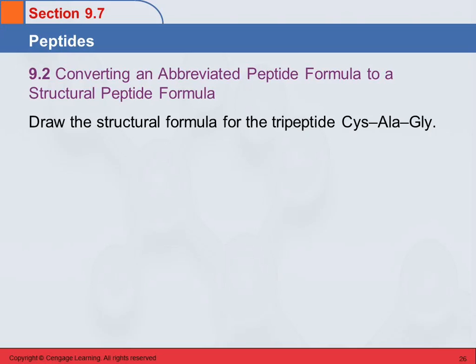So converting an abbreviated peptide formula to a structural peptide formula. Draw the structural formula for the tripeptide Cys-Ala-Gly. So we need to refer to our table so that we can get the side chains right, but we can draw the backbone in and then put in the side chains. So the backbone's always going to be the same. We're going to put the N-terminal on the left, C-terminal on the right.